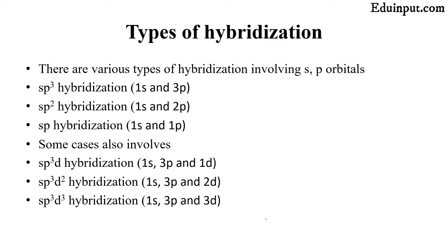There are more than seven types of hybridization, but the basic level includes sp3, sp2, and sp hybridization. Some special cases exist in higher level chemistry: sp3d, sp3d2, and sp3d3 hybridization, which involve d orbitals. In the basic type of hybridization only s and p orbitals are involved, so we are not going to discuss those three special cases as they are not part of our curriculum.